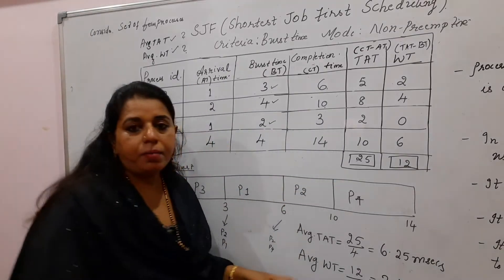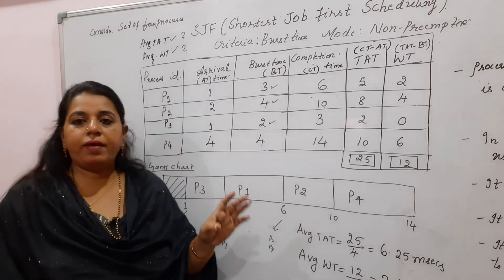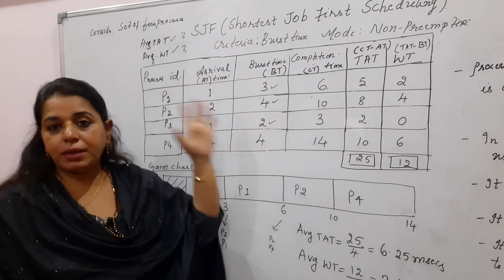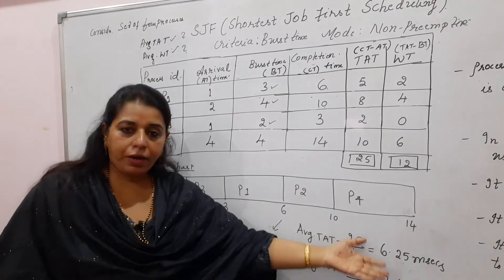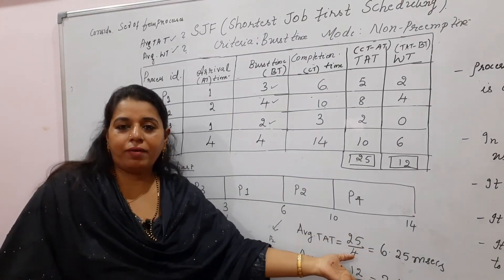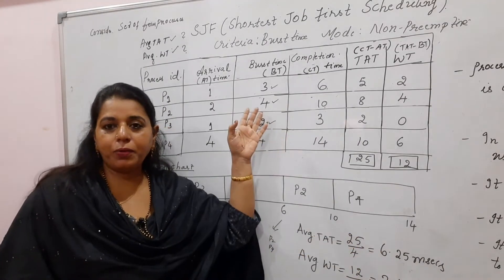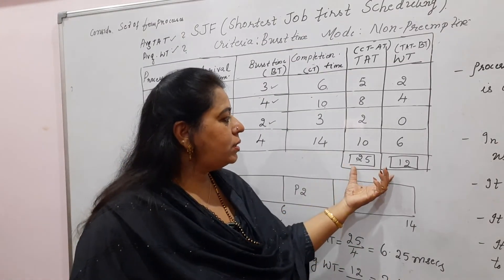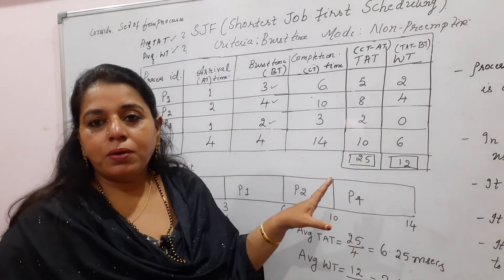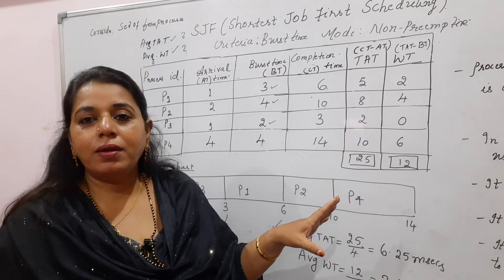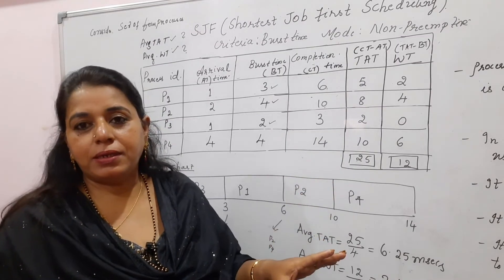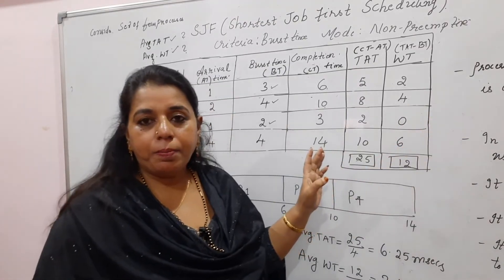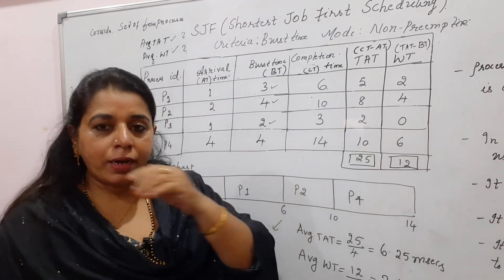The reason I write milliseconds is because the problem states that arrival time and burst time are given in milliseconds, so the solution values are expressed in the same units. Whatever units are given in the problem, use those same units in the solution.